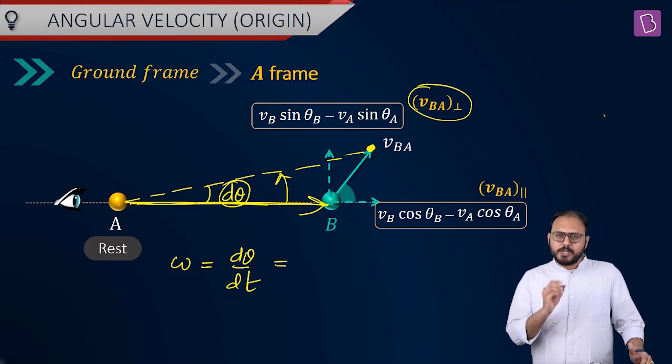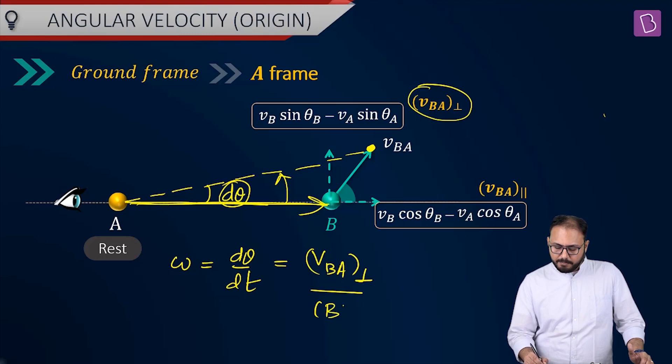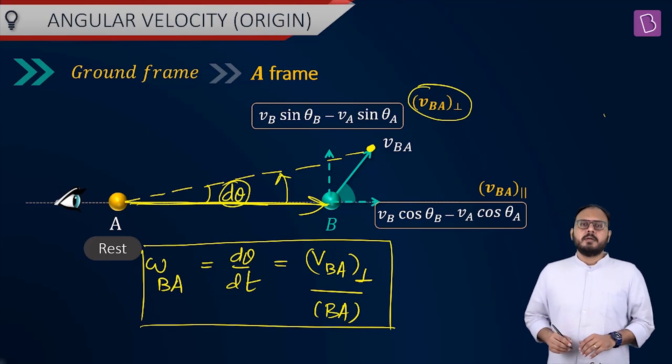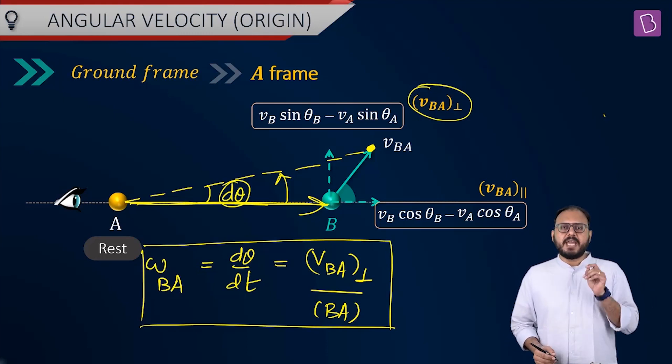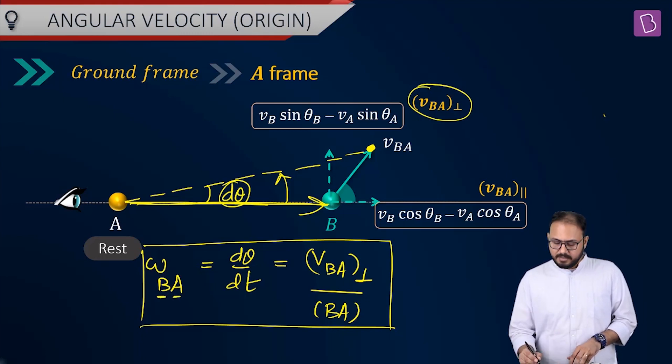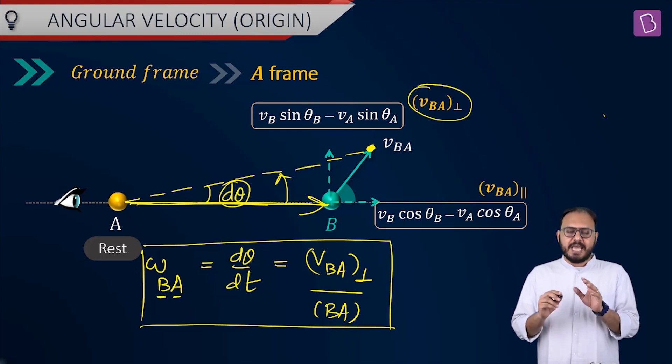But then, what would this be equal to? This would be equal to VBA perpendicular upon BA. And not just that. Whose omega is this? This is omega of B as seen by A. So the parent definition of omega goes like this. Omega of a particle B as seen by particle A is nothing but relative velocity component of them perpendicular to line joining them upon the length of line joining them. Relative velocity component perpendicular to line joining them upon the line joining them.